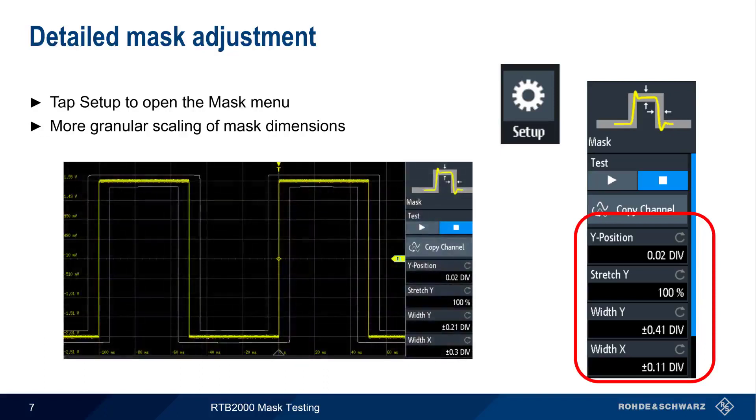For example, we could expand the mask tolerances in the X direction so the mask is more tolerant of variations in Rise and Fall times, but less tolerant of variations in the Y direction, such as Ringing or Overshoot.